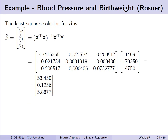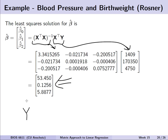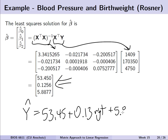Tying these components together, we can estimate all beta coefficients efficiently. Multiplying (X-transpose X) inverse by X-transpose Y, we arrive at our estimated regression equation: Y-hat equals 53.45 plus 0.13 times weight plus 5.89 times age in days. We very quickly and efficiently obtained our fitted regression equation for use in prediction or inference.